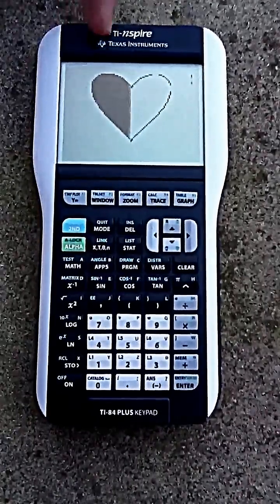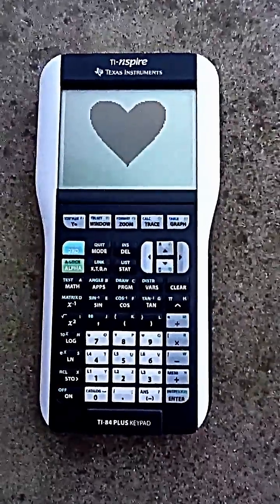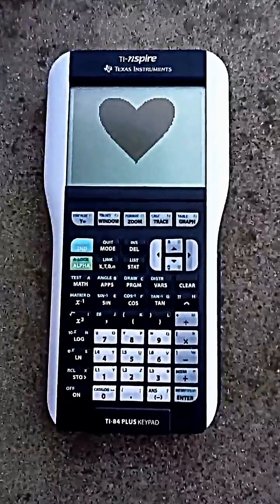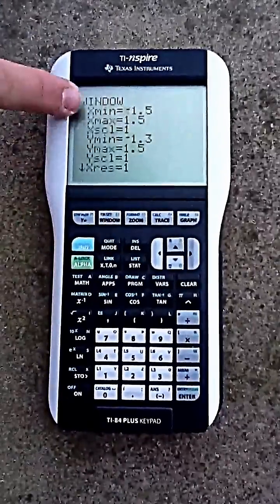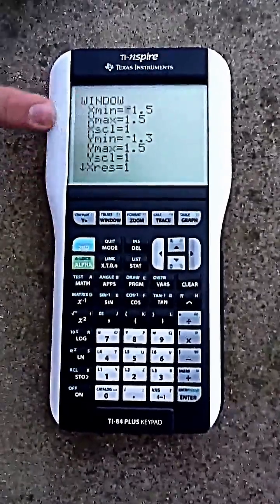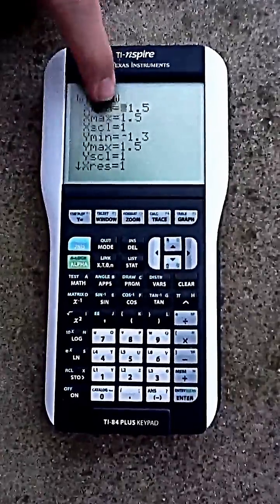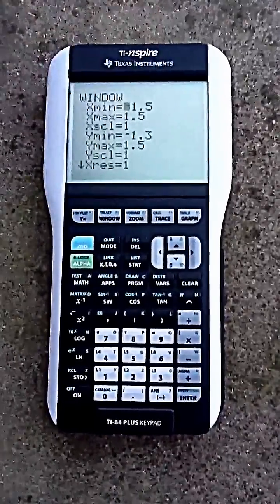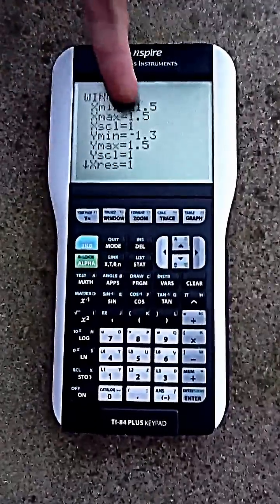As you can see, the calculator graphed. Now that your heart has been completely colored in, you can go to window. And these numbers, no matter what they are, you're going to change your X minimum to negative 1.5, and then your X maximum to positive 1.5.